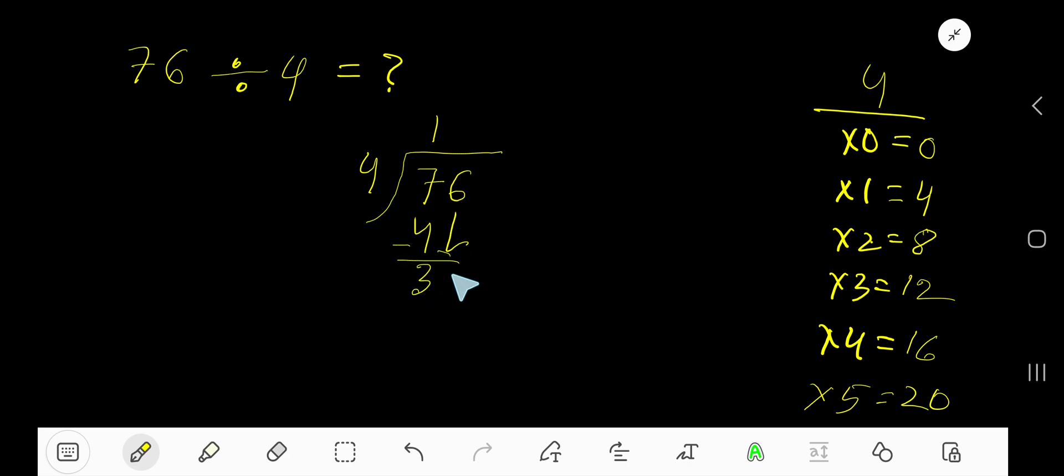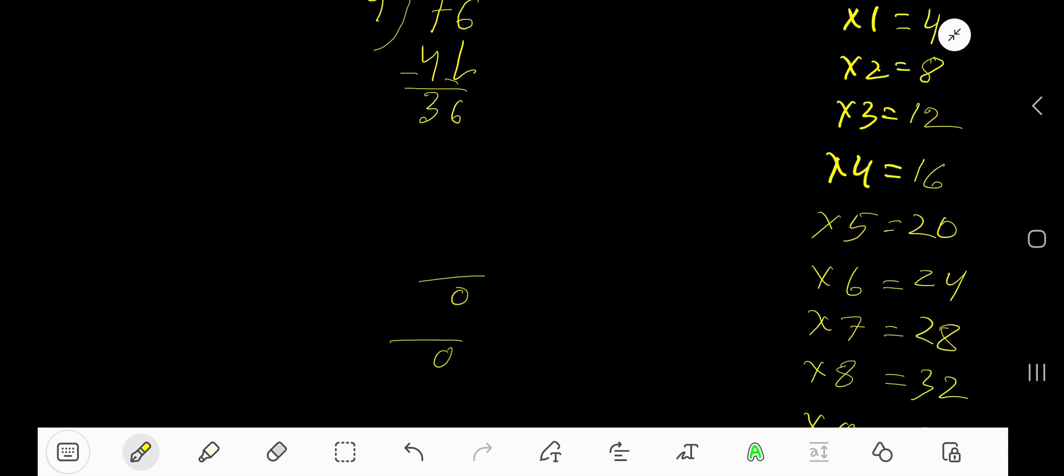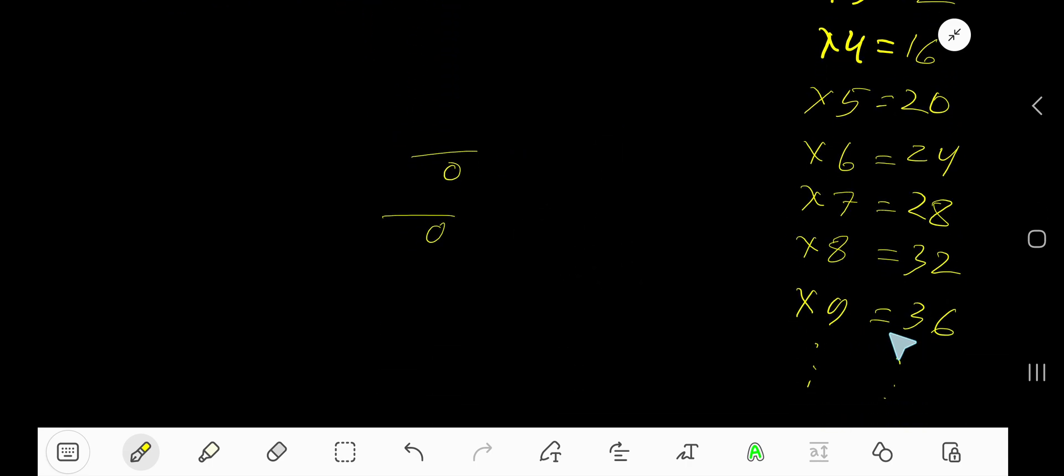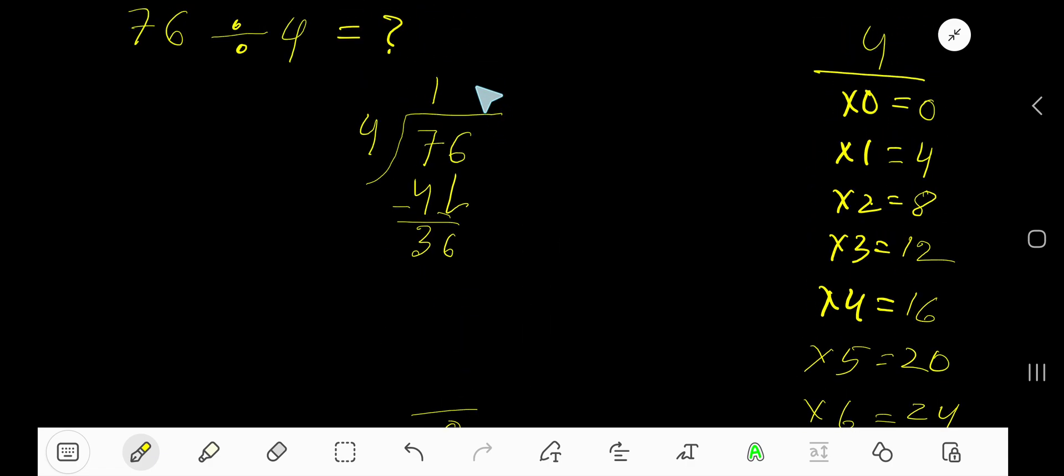Bring down this 6. 4 goes into 36 how many times? Look, 9 times 4 is 36. So write 9. 9 times 4, 36. Subtract, you are getting 0.